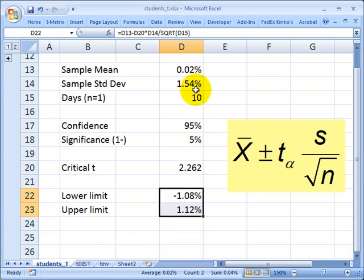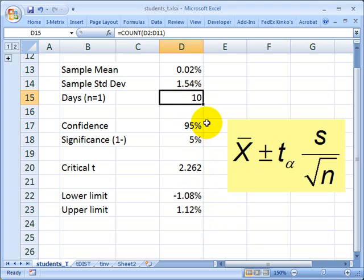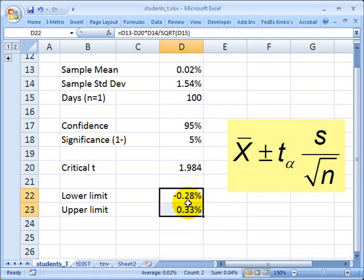And what it tells me is, with 95% confidence, I can say the true population mean is between negative 1.08% and positive 1.12%. And this has been a function of both my confidence and the number of days. So for example, just pretend that I went to 100 days. I increased the number of days from 10 to 100. Notice my confidence interval tightens. I have a smaller confidence interval with more observations.